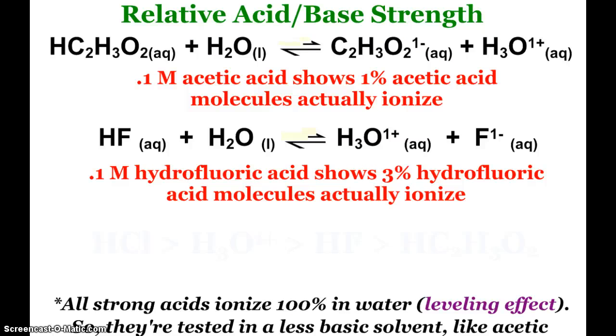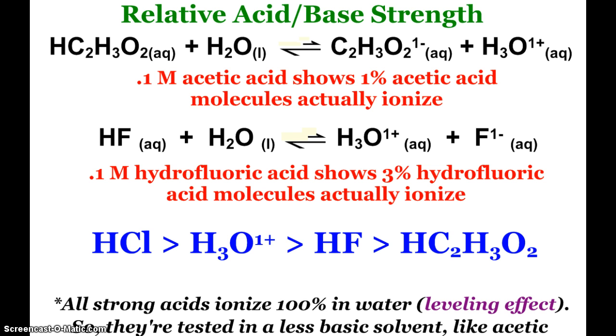And so when we look at some weak situations, so for example, 0.1 molar acetic acid, we only find about 1% of acetic acid molecules have actually ionized. And if we look at hydrofluoric, similarly, we only show 3% of hydrofluoric acid molecules actually ionizing. So based on this information, again, done experimentally, and the information we just saw, we can start to put together a ranking system. So hydrochloric acid is strongest, then hydronium, then hydrofluoric, and then acetic acid. And so you can see through experiments, that's how they came up with this ranking list of strong versus weak.